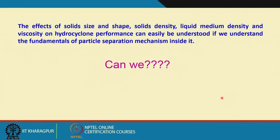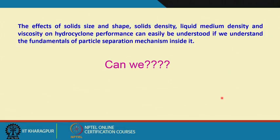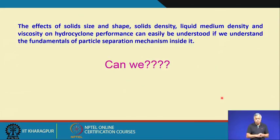I pose this question for you to discuss: if we understand how a cyclone works, can we not predict the effects of solid size and shape — for instance, what happens if particles are flaky, or coarser or finer? What is the role of particle density, liquid medium density, and viscosity on hydrocyclone performance? If we understand the fundamentals, we can definitely predict this.